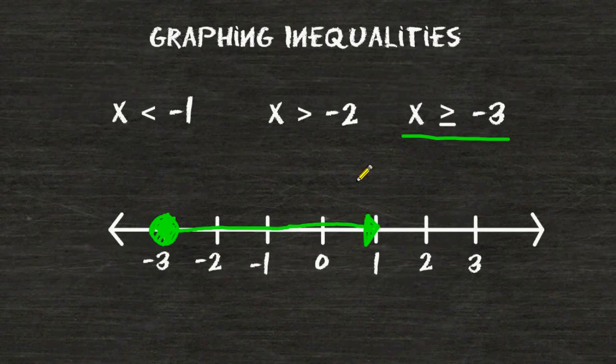One thing that might help you remember which way to draw the arrow when graphing inequalities is this. If you take a look at the inequality symbol, it kind of looks like an arrow. For example, it looks like this inequality symbol is pointing to the right. So when graphing your inequality, the arrow on your number line also must be pointing to the right.